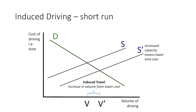What happens when we add capacity to the system? That's equivalent to shifting the supply curve to the right, so that the cost of driving goes down. And when that happens, the new supply curve and the demand curve intersect in a new spot, and we get an increase in the volume of travel on the roadway system. That's what we call induced travel — it's the increase in driving we get from the lower cost of driving that the added capacity created.